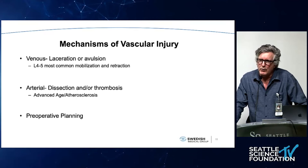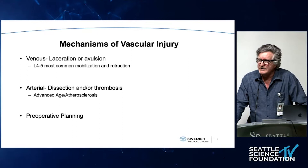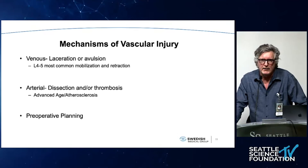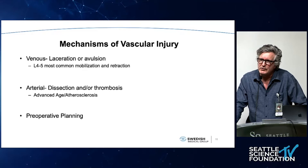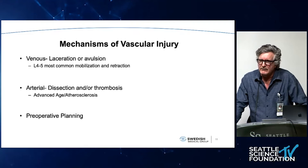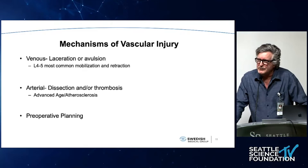Preoperative planning is very important, especially in redo cases. The spine surgeon and the access surgeon should really get together, look at the films together, and determine what the approach is going to be and what potential difficulties may arise. We also plan in terms of whether patients have duplications of the cava — sometimes you can see more than one iliac vein. They're rare, but these are things you want to see prior to surgery.